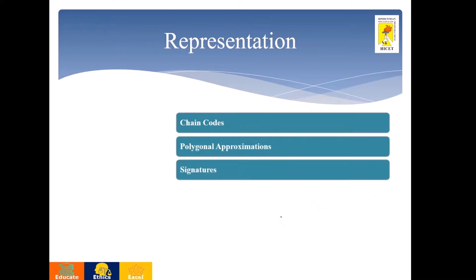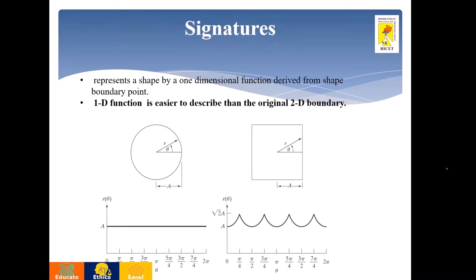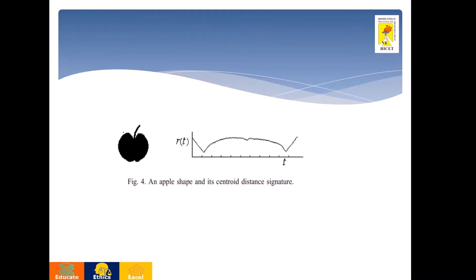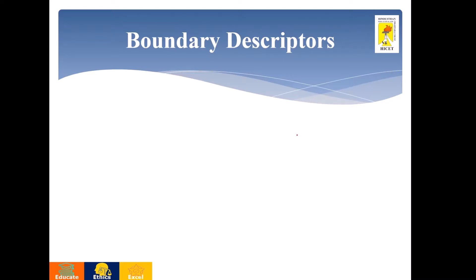The last one in boundary representation is signature. Signature helps to represent the boundary in a single one-dimensional function. If it is a circle, the radius is constant throughout, so if you extend it you will get a straight line. Whereas for other shapes, you will get different curvatures — this portion has one value and this has another. So this is a signature. For example, if this is the shape of an apple and you extend it, starting from here you will trace the varying curvatures into a one-dimensional plot. Just extending the two-dimensional boundary into one dimension gives you the signature.